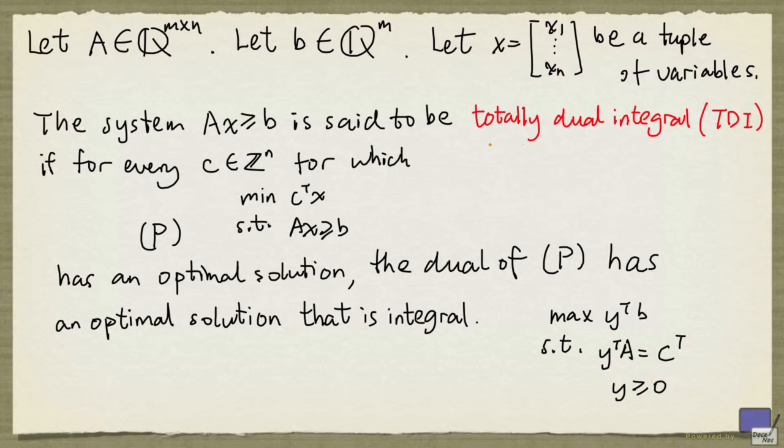So what this is saying is, to be totally dual integral, you need this problem to have an optimal solution that has integer entries as long as c is chosen such that c has integer entries and the problem has an optimal solution.